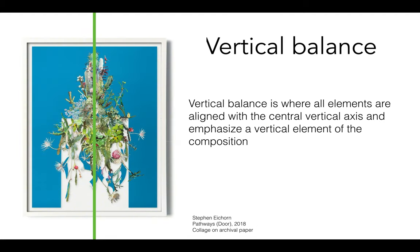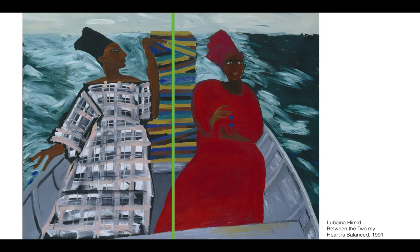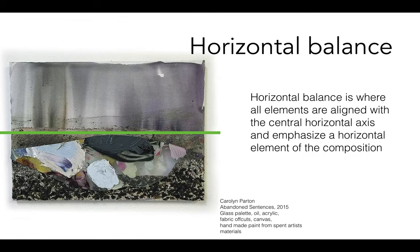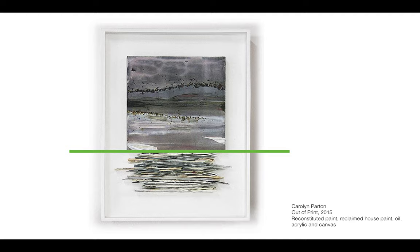Vertical balance is where all of your elements are aligned along the vertical axis. If we magically folded it in half it emphasizes the vertical aspect of the composition. Here, the complexity of the pattern on the figure on the left balances the intensity of the red dress on the woman on the right. Horizontal balance is where all elements are aligned with a central horizontal axis. Keep in mind that the horizontal or vertical axis does not need to fall in the exact center — you can push it up, down, left, or right.